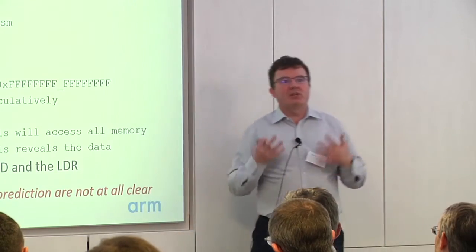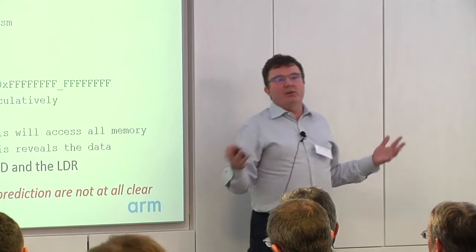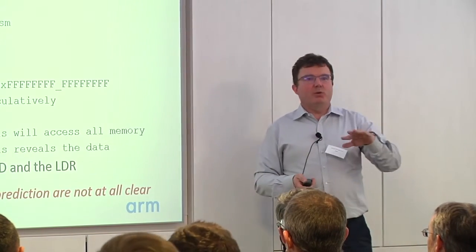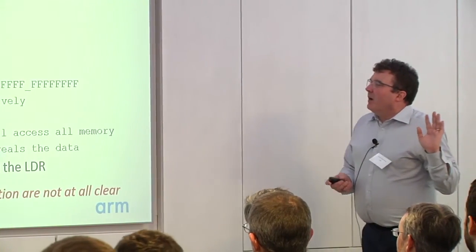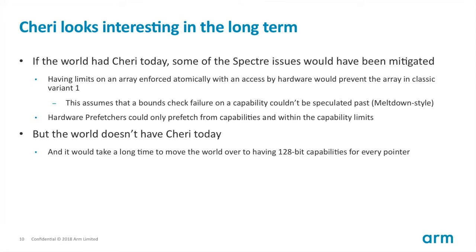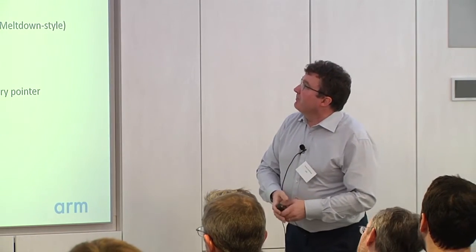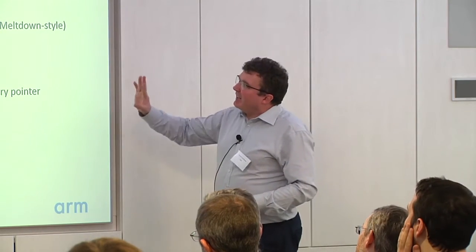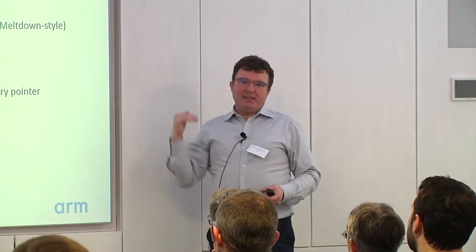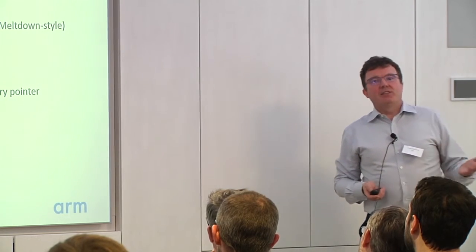There's a lot of research and education needed to formalize this, because we all know how to cope with branches — we read about them in Hennessy and Patterson in the 90s. But there is a lot of stuff people don't know about. CHERI would be really interesting for this in the long term. If we'd had CHERI today, some of the Spectre issues would have been mitigated — particularly variant 1.1 — assuming the bounds check was acted on at the time of the memory access.